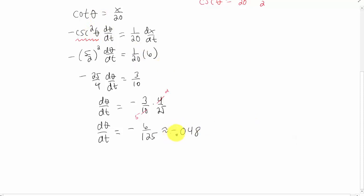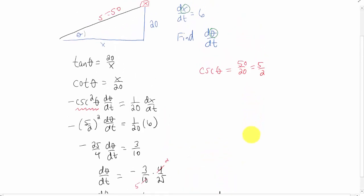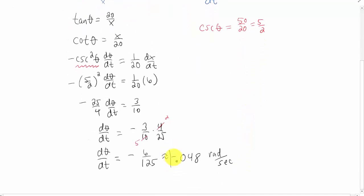So our final answer is our angle is decreasing, because it's negative, at a rate of 0.048 radians per second. Now I'm going to take a look, make sure that those are the correct units. Yep, we had feet per second up here, so our time units are going to be in seconds, and that looks like it.